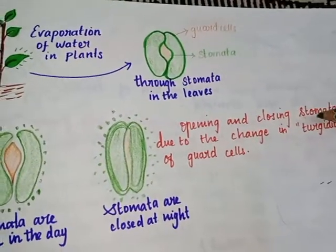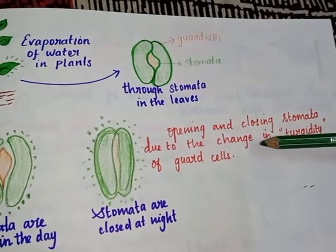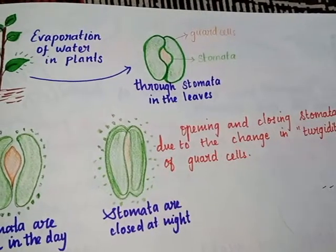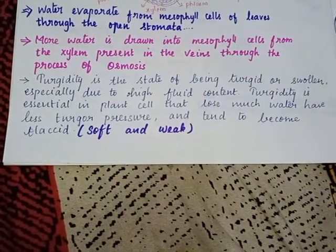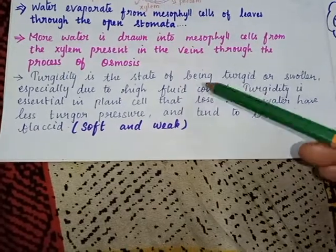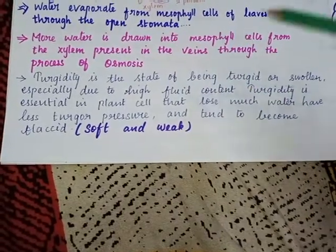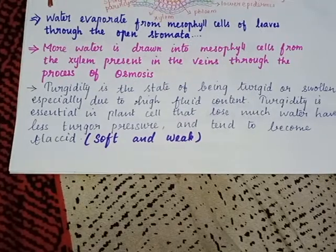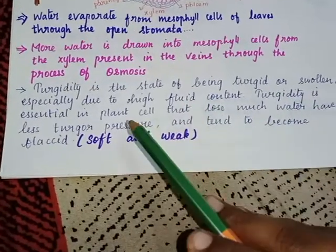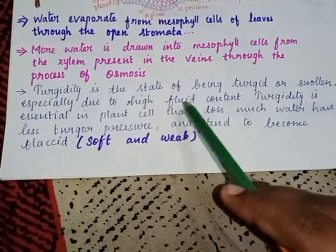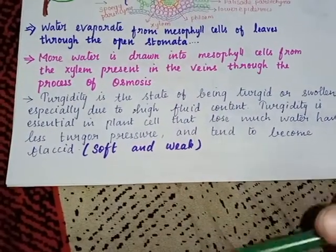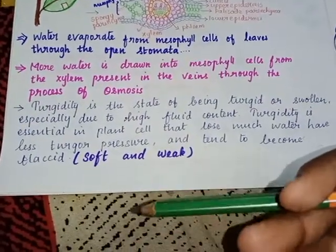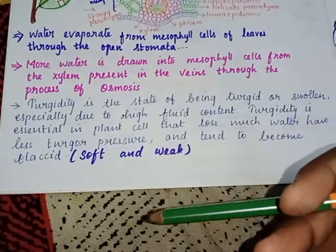Opening and closing of stomata is due to the change in turgidity of guard cells. What is meant by turgidity? Turgidity is the state of being turgid or swollen, especially due to the high fluid content. If the water amount is high, it becomes swollen — that is called turgidity.